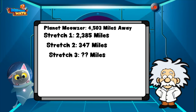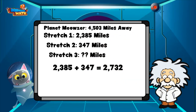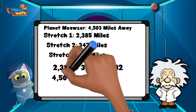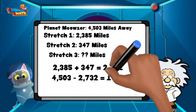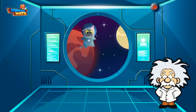Let's see. First, let's add together 2,385 and 347 to get 2,732 miles. Then we can subtract 2,732 from 4,503 to determine how many miles he has left to go. I got an answer of 1,771 miles. That's a lot of travel, space cat!